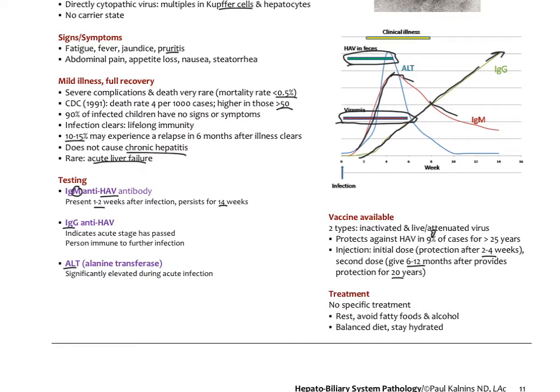There's no specific treatment. It's supportive basically. I won't go into herbal therapies here. This would be a classic liver damp heat pattern. Different artemisias are used in Chinese medicine to treat this. Rest, avoiding fatty foods and alcohol, basically giving your liver a rest, balanced diet, staying hydrated, plenty of electrolytes. That would be hepatitis A or infectious hepatitis.